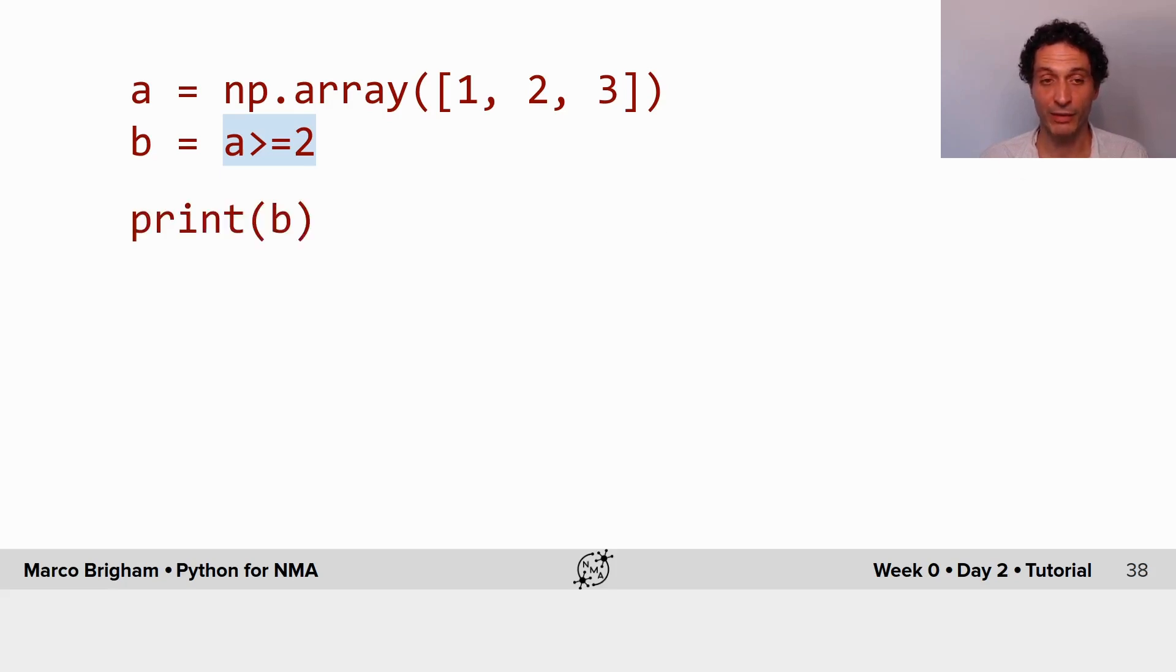If I look at the content of b, if I print the content of b, I have a boolean array where the first value is false because one is not larger or equal to 2, but the other two values which respect this condition, they have value true.